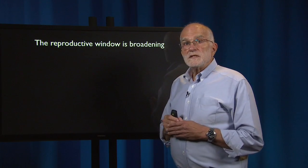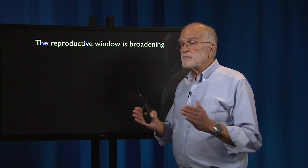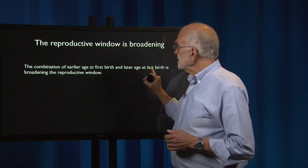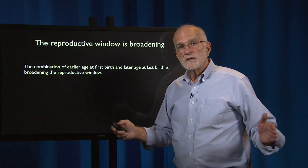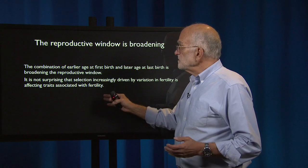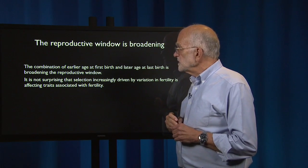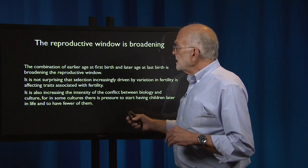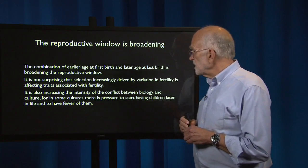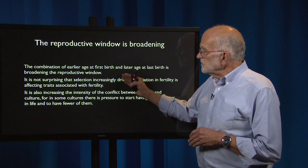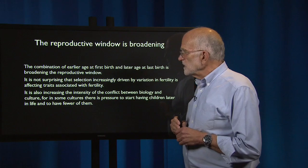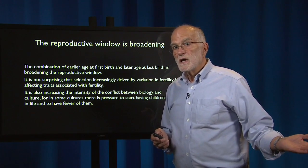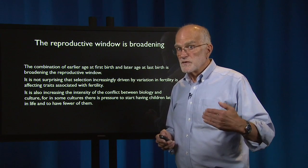What this means is that in post-transitional societies, the reproductive window in humans is broadening — the combination of earlier age at first birth and later age at last birth is widening it. This is not surprising because selection is increasingly driven by variation in fertility. It is also intensifying the conflict between biology and culture, as in some cultures there is pressure to start having children later and have fewer of them, particularly in two-career families where many women delay their first child until their 30s.